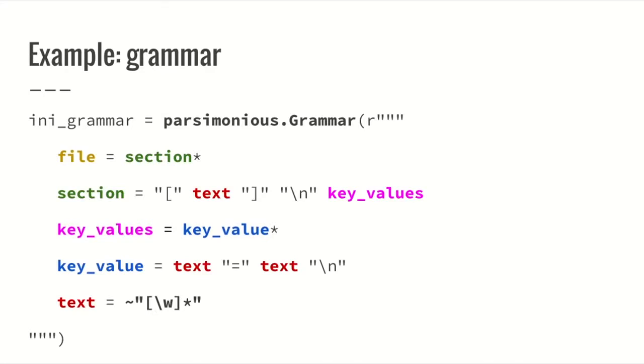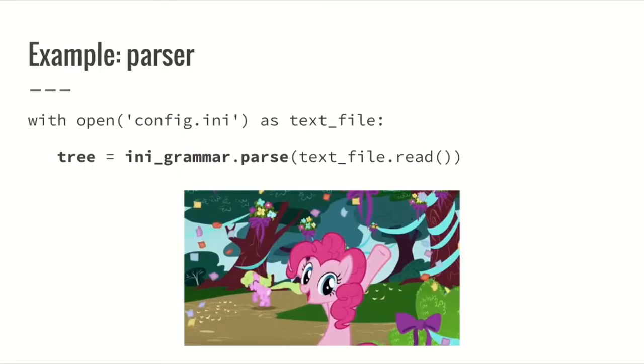The grammar is also pretty simple. You can write it as text: a file is a bunch of sections, a section is text and keys and values, key-values are a set of key-value pairs, and each key-value is text equal text. You can use regular expressions inside your grammar — for example, text here is defined by a regular expression. Once you get a hold of it like you got a hold of regular expressions, you have a really strong tool. Because returning to those two lines of code, now that we have the grammar, these two lines are essentially a validator — you can take any configuration file and say if it's valid using the grammar and two lines of code.